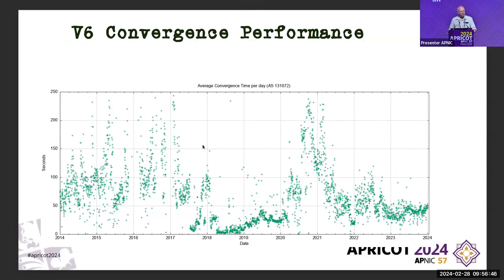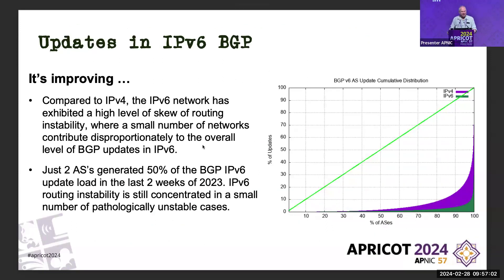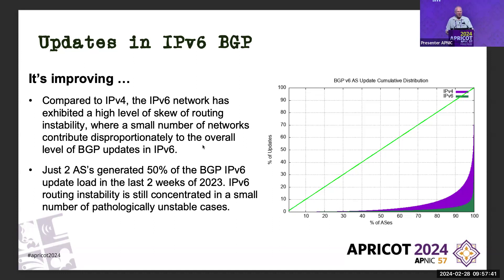This is the cumulative distribution. If everyone did updates, it'd be right on the diagonal. If only a few very naughty people did almost all the updates — the green line, V6 — only a small number of folk would actually be contributing to the entire set of noise. That's what's going on: a small number of people are pathologically unstable and they just pound the entire network with a huge number of updates. Two ASs account for 50% of the V6 updates — we thank you very much.